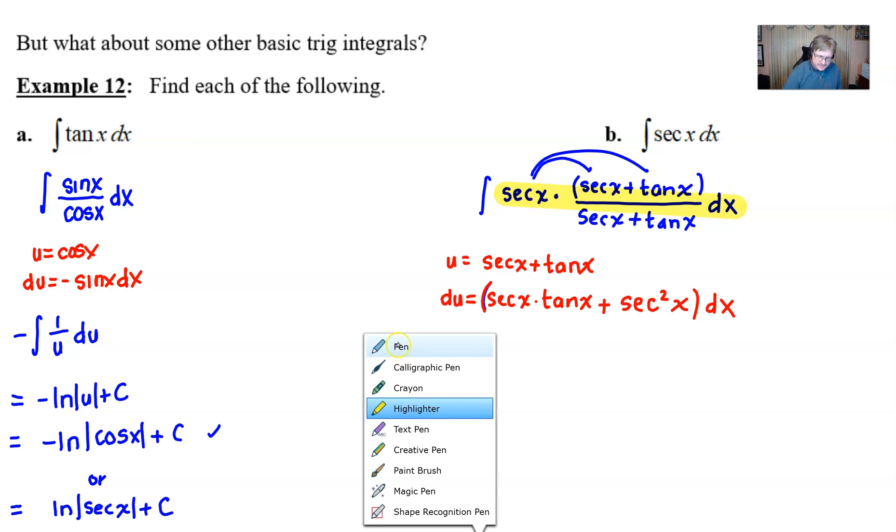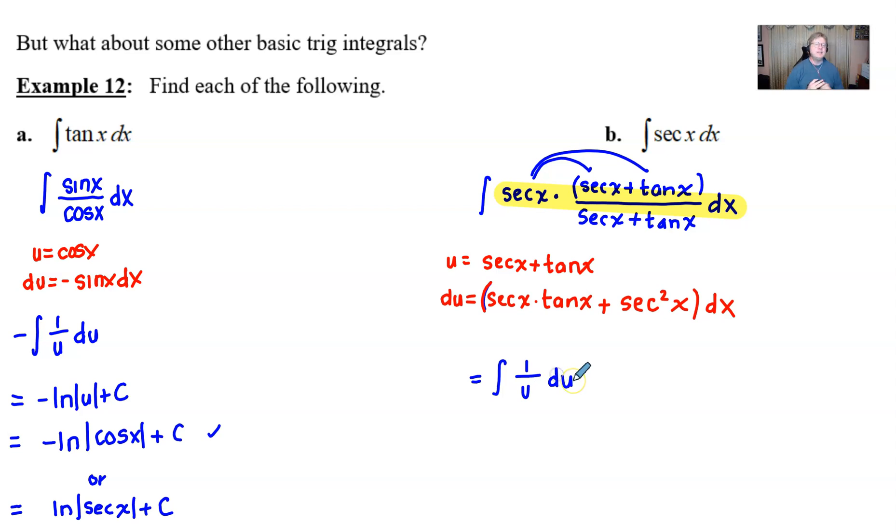Everything else is the u in the denominator. Lo and behold, this thing simply becomes the integral of 1 over u with respect to u, only because we saw to it to multiply by that very crazy secant plus tangent over itself. We get natural log of absolute value of u plus C, and once we back-substitute our u, we replace it with secant of x plus tangent of x.